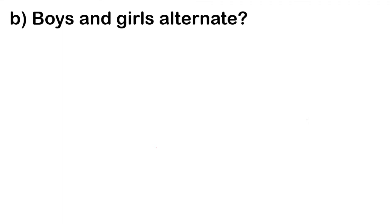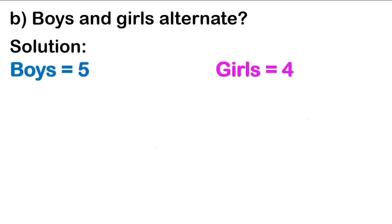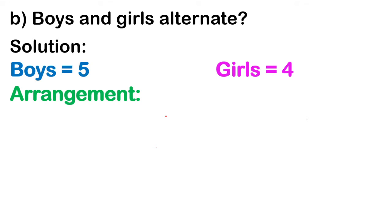Next, letter B: boys and girls alternate. The next restriction is that the seating arrangement must be boys and girls alternating. Remember that we have 5 boys and 4 girls. What arrangements are possible? We have 5 boys and 4 girls sitting in 9 seats, in which they must be seated alternately.